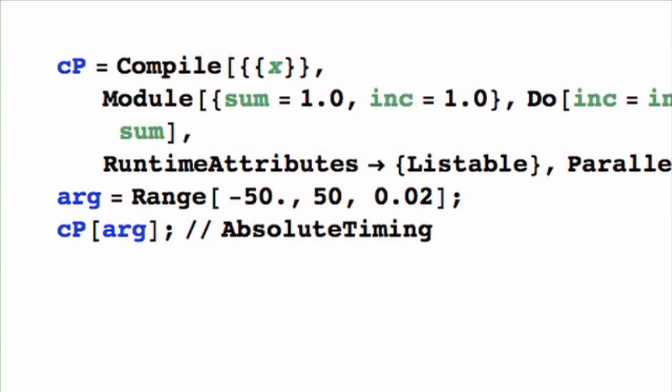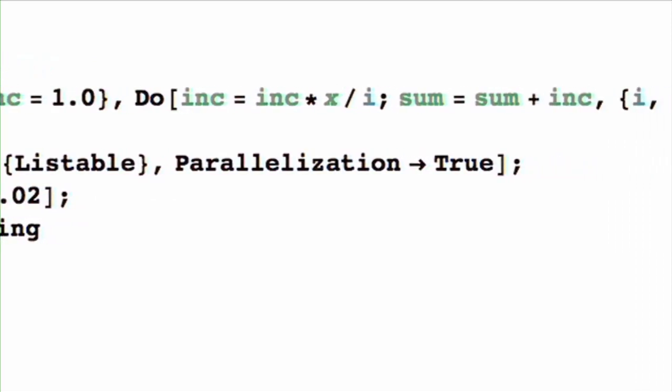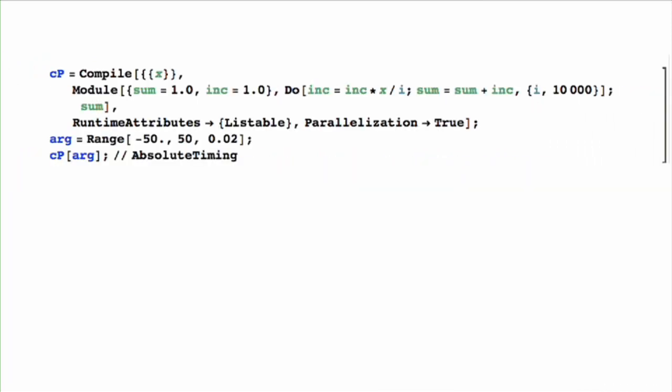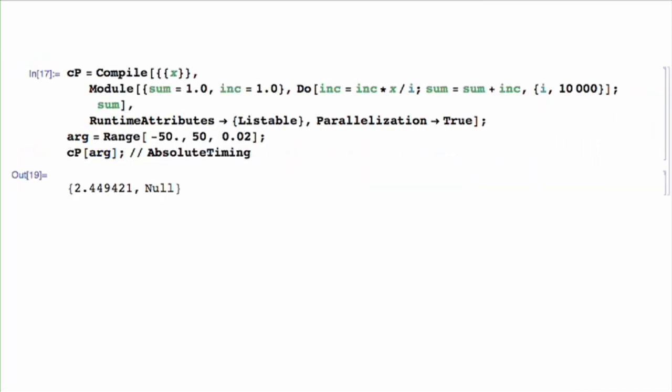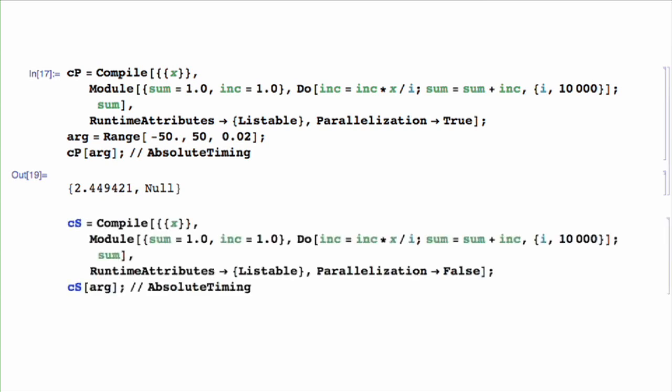Another advance in the Mathematica compiler is its operation with multi-core machines. So this involves running the compiled function on different parts of the data but all at the same time in parallel, and so this is a new form of parallelism. It's a very lightweight form of parallelism that's good for multi-core machines.